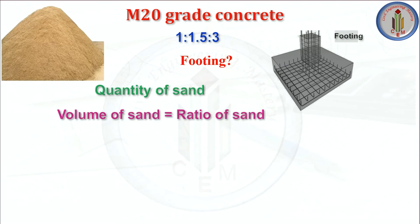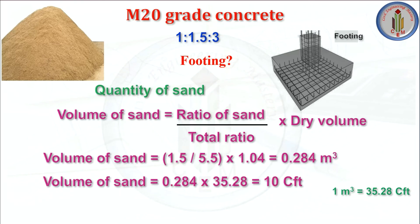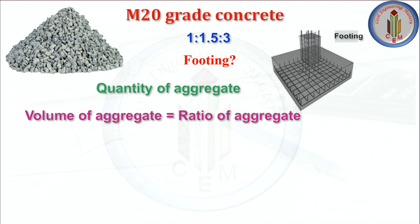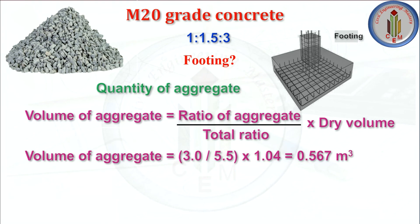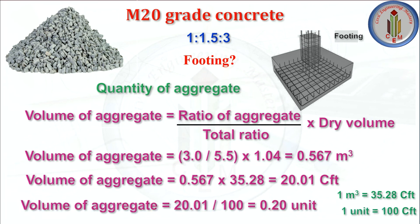For footing, quantity of sand equals ratio of sand divided by total ratio, multiplied by dry volume — giving 0.284 meter cube, which is 10 CFT, converting to 0.1 unit. For aggregate, volume equals ratio of aggregate divided by total ratio multiplied by dry volume — giving 0.567 meter cube, which is 20.01 CFT, converting to 0.2 unit of aggregate for footing.